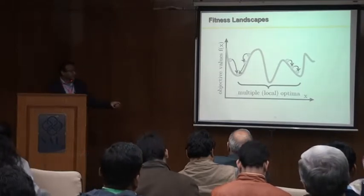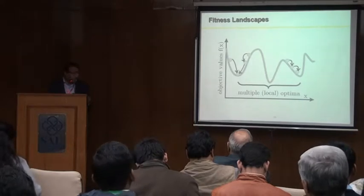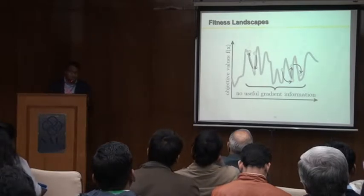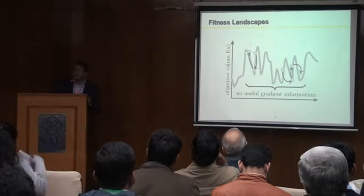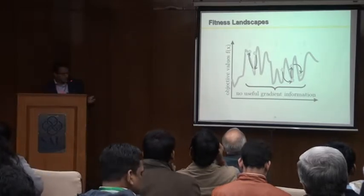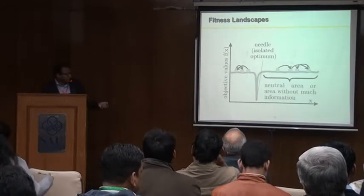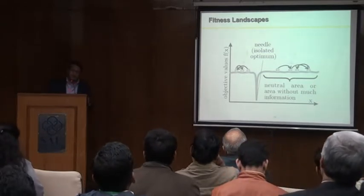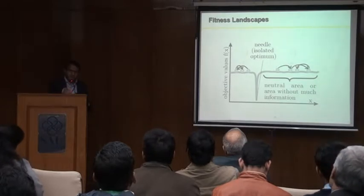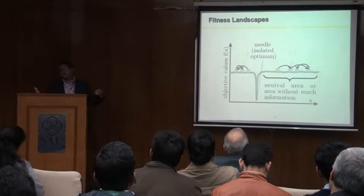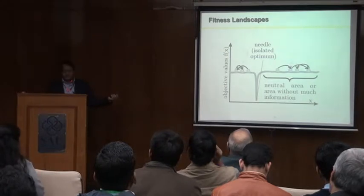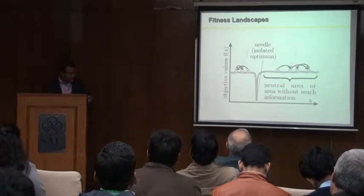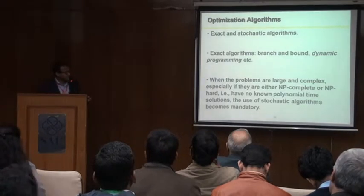So we end up either here or here instead of the global optimum. And for complicated problems, we might have real multiple optima where gradient information might not help at all. Sometimes we have things like isolated optima, so basically you search for days or weeks and your algorithm might not find the solution. You must not say that this method doesn't work because I ran the algorithm for a few weeks and it doesn't converge well. Basically what we need is some tuning.